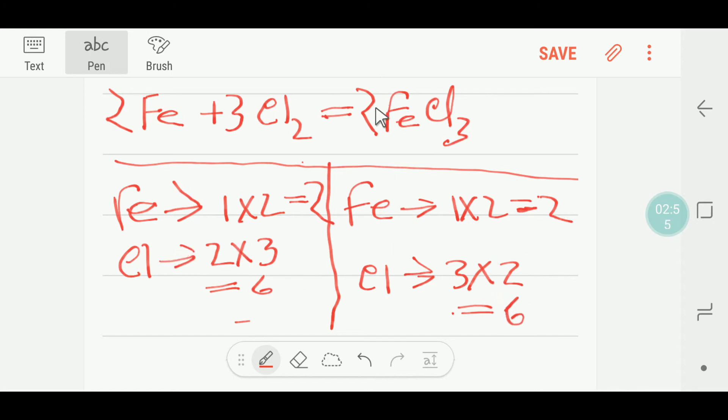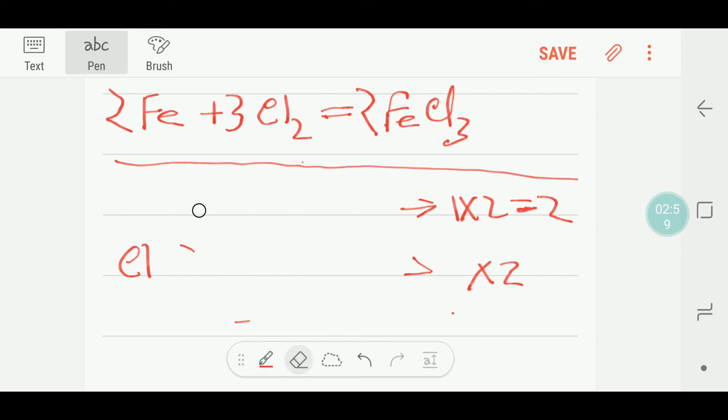So this is the balanced reaction. But I will show you another way to balance this reaction depending on common sense. You can apply this tactic in your examination hall. This is iron, this is chlorine, and we get ferric trichloride.